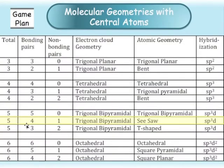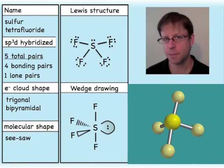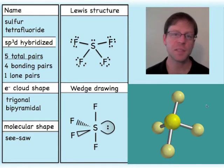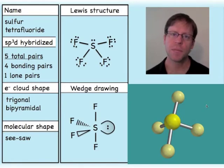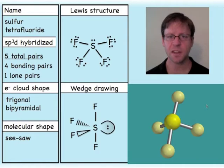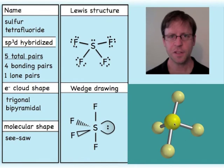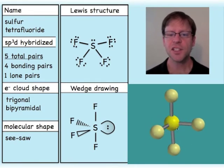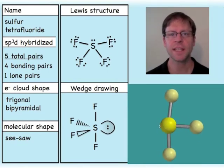Next I'll move to the case that still has five total things hanging off, except one of those things is going to be a lone pair. The example is SF4. I moved one column to the right on the periodic table to achieve a single lone pair. Note that since we're invoking d orbitals for expanded octets, the central atoms can no longer come from the second period of the periodic table — they're not close enough to utilize their d orbitals.